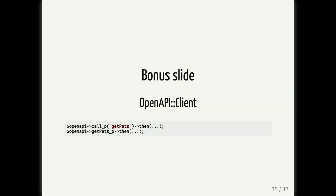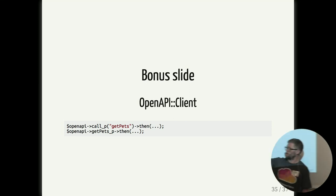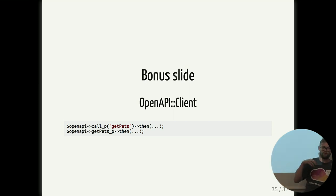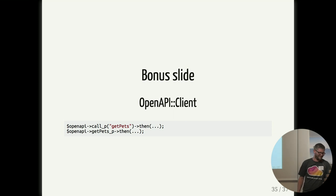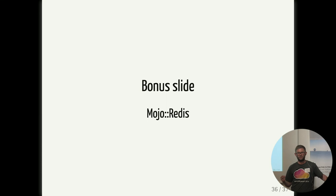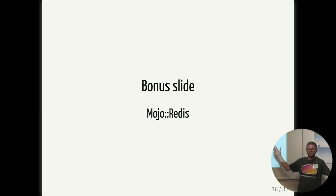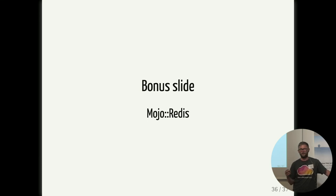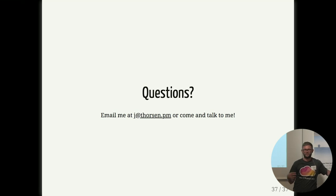I'm doing OpenAPI version 2 stuff on CPAN. If anyone has used OpenAPI clients, you used to have to do call_p on the operation ID, but now I'm injecting all of those methods as well, so you can do whatever operation_id_p directly on the client. And is anyone using Mojo::Redis? Mojo::Redis is available on CPAN - it's a lot easier to read the actual source code, easier to maintain, does a lot of new clever things that Mojo::Redis 2 doesn't do, and you can use it with promises. I hope you enjoyed the presentation. If you have any questions about this or OpenAPI or whatever I'm doing on CPAN, come and ask me.